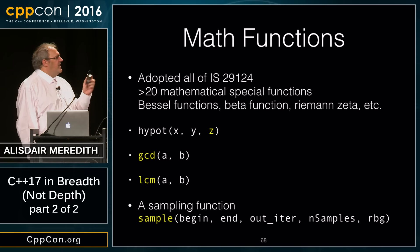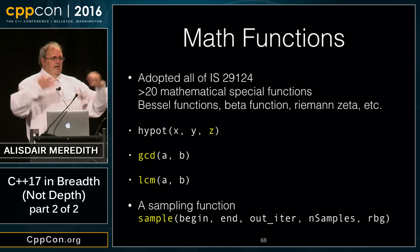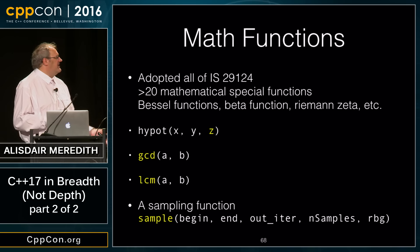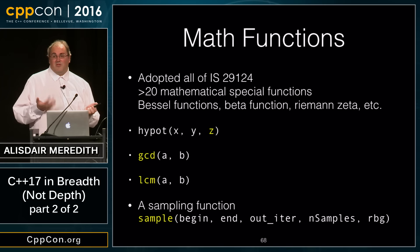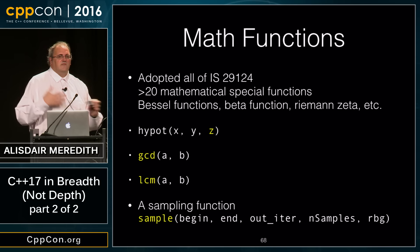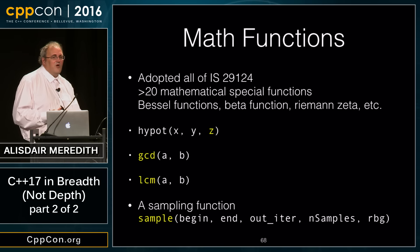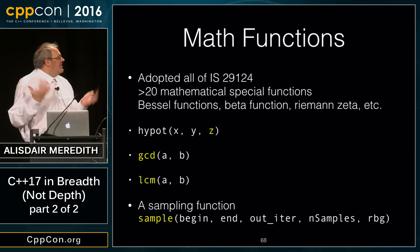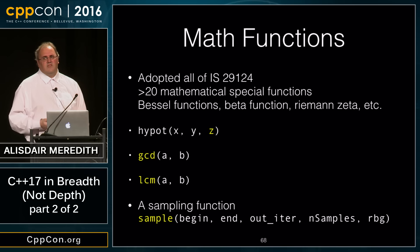On the math side, we're incorporating the separate IS created around 2012 based on the original library technical report, which has around 20 mathematical special functions — Bessel functions, beta functions, the Riemann zeta function, and others. Demand from scientific communities, combined with the burden of maintaining two separate standards and the availability of good implementations, has led us to fold these into the main standard.